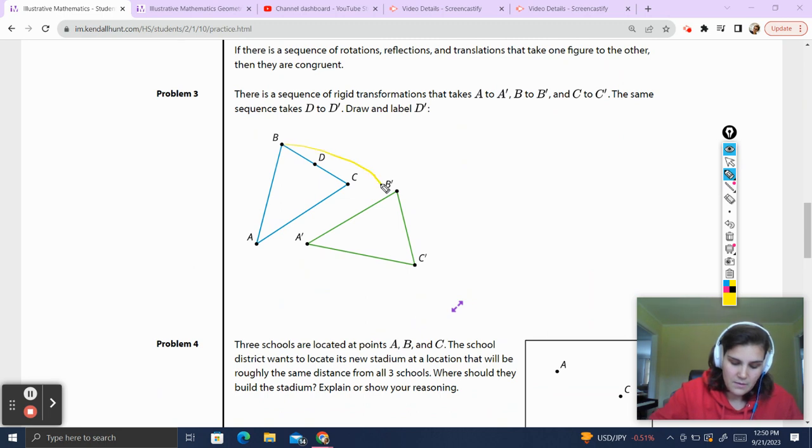So B moves to B prime, C goes to C prime and A goes to A prime. So the whole shape is rotating over. Now, if D is right here, that means D is going to stay basically where it would be in between B and C, with this case in between B prime and C prime, and we would label him D prime. And that would be our answer. Let's go on to the next question.